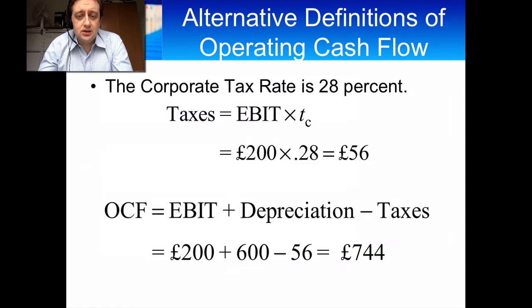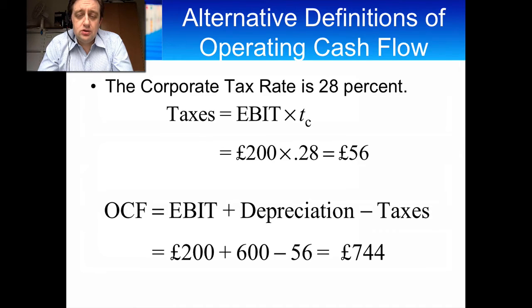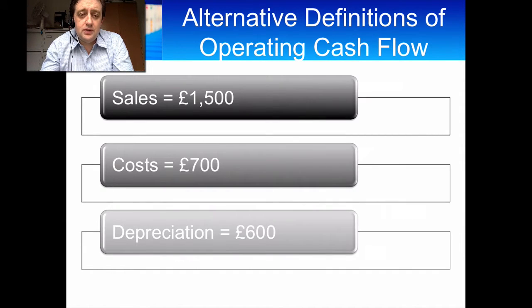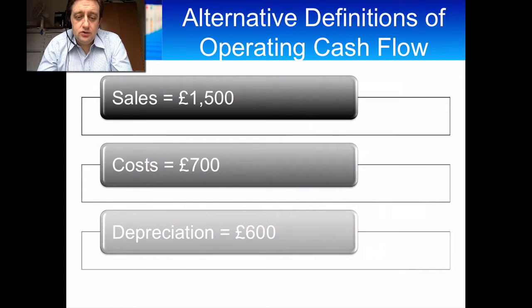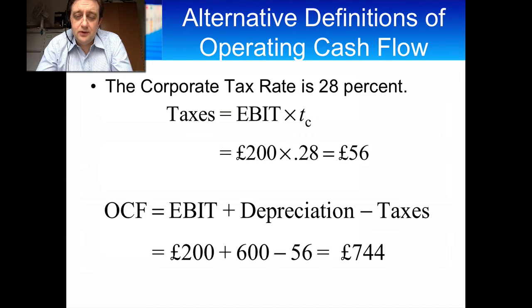To calculate our tax, we take the tax rate and multiply it by the earnings before taxes. So it's 200 pounds — that's 1500 minus 700 minus 600 multiplied by 0.28 — and you get a tax payment of 56. So the net income then is 200 minus 56, which is 144 pounds.